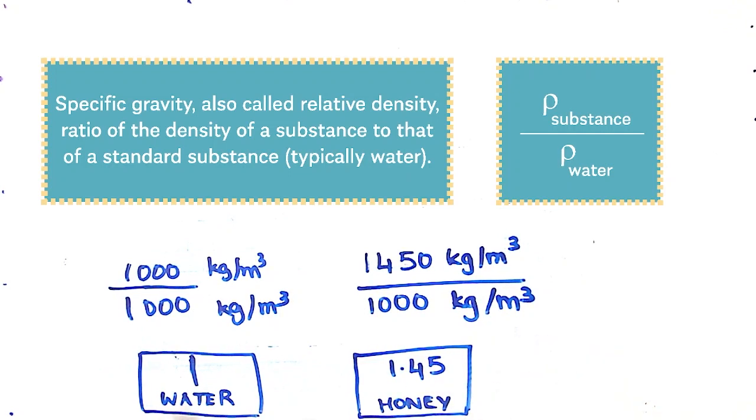By looking at these numbers, instead of just looking at these big values, we see that it's very simple and easy to understand that honey is going to be denser than water. If we were to take a liquid that had a lower density, the specific gravity would be much lower. That's why I think specific gravity is important and we should remember.